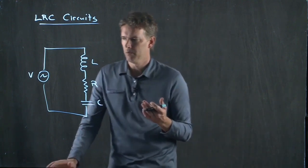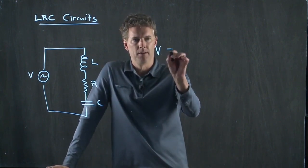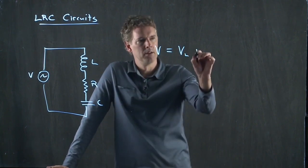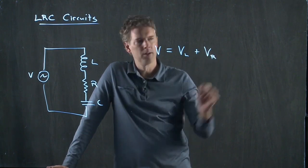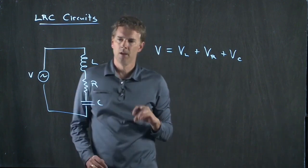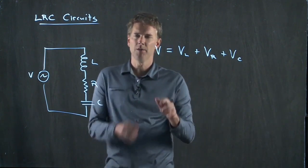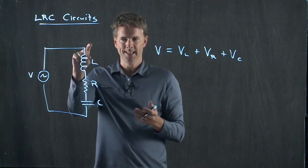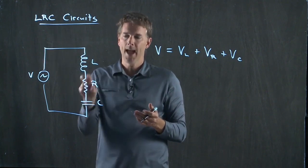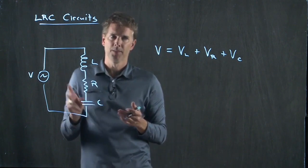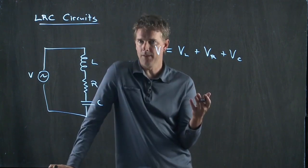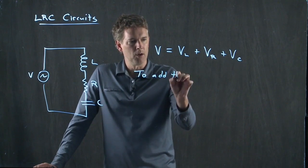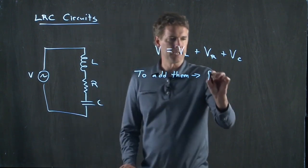How do we deal with this? We know that the voltage drop has to consist of the voltage drop across the inductor, the voltage drop across the resistor, and the voltage drop across the capacitor. But there's the complication that the current sloshes back and forth differently in the inductor and differently in the capacitor than the driving signal. So we have to be very careful when we add these things up, and to add them up appropriately we have to use something called phasor diagrams.